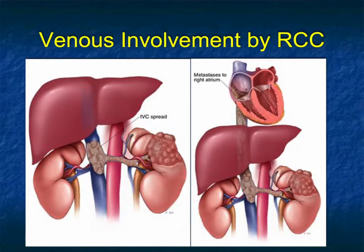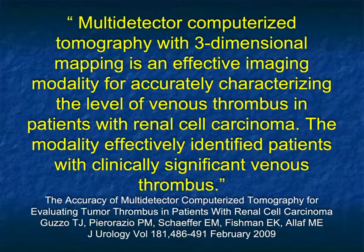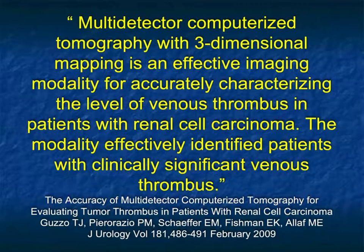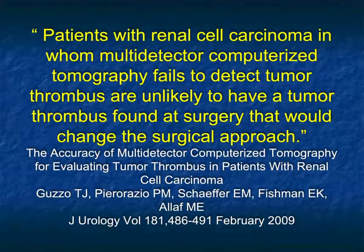Can you detect venous involvement in arterial phase imaging? The answer is yes, but you will have an issue defining the extent because of flow-related changes. Arterial phase can show whether the thrombus is bland or tumor thrombus because of neovascularity, but venous phase imaging is best for determining renal vein or IVC involvement. The accuracy of CT is in the high 90s — probably 97 to 99 percent — for picking up renal vein or IVC involvement, as noted in this article by Guzzo. Patients with RCC in whom CT fails to detect tumor thrombus are unlikely to have a thrombus found at surgery that would change the surgical approach.